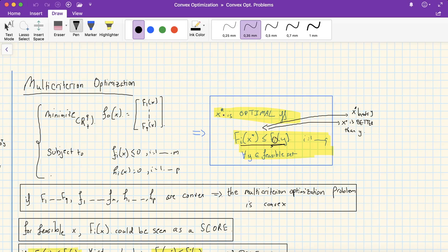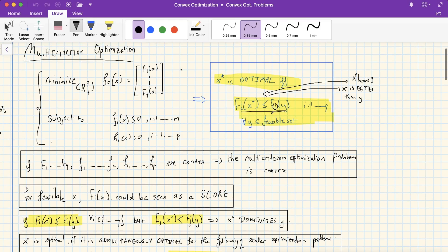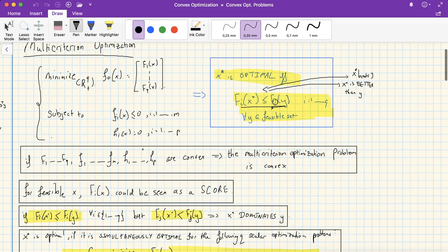A point is said to be optimal in a multi-criterion optimization problem when we cannot find another point that achieves a lower cost than x star, the optimal point. So all costs are minimized at the optimal point. Also a multi-criterion problem is said to be convex when all the functions involved are convex. That is all my uppercase F's and lowercase f's and the h's are convex.